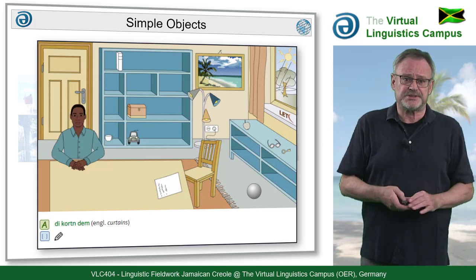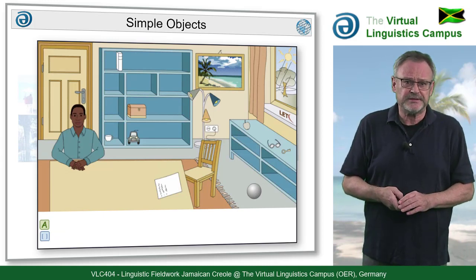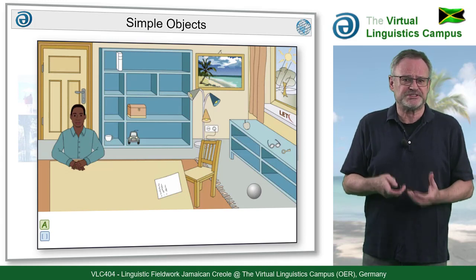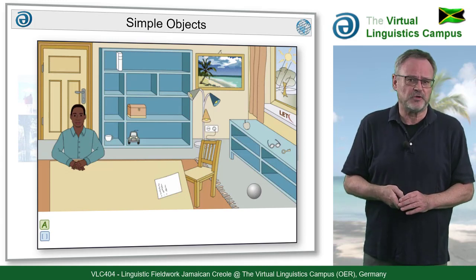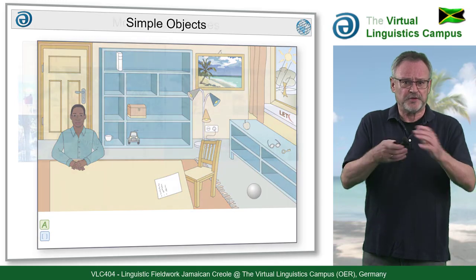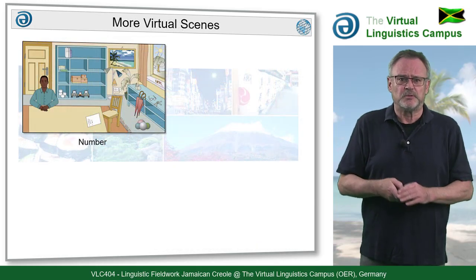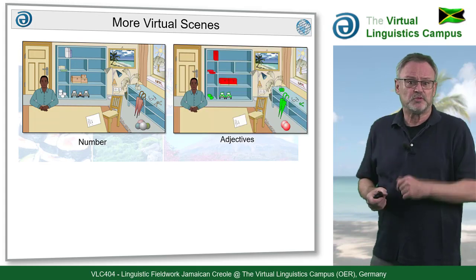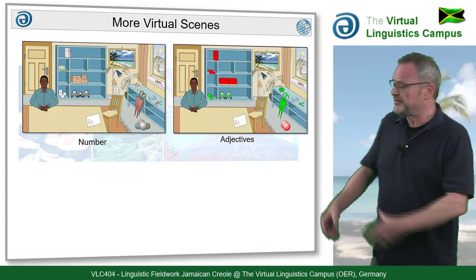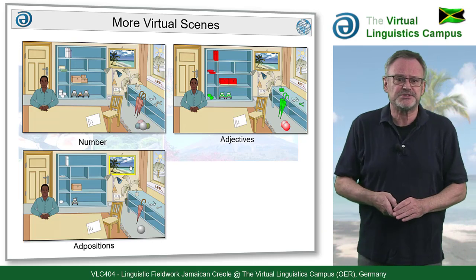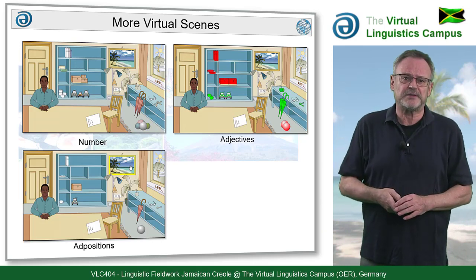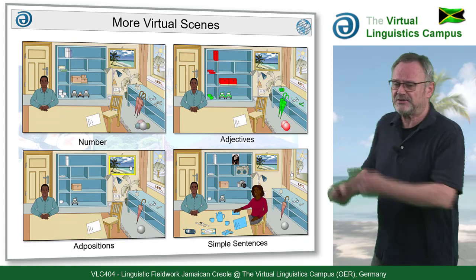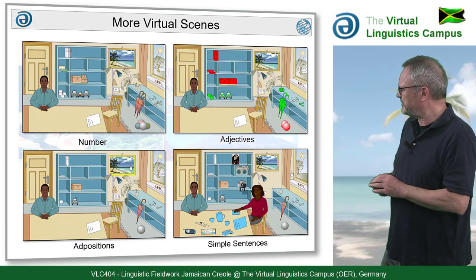Your first task is to transcribe what you hear as carefully as possible in order to develop a first sound inventory of the language in focus. Further scenes deal with number, with adjectives — for example the colors — with locative relationships and the organization of oppositional phrases, and even with sentences that are acted out by a second speaker.